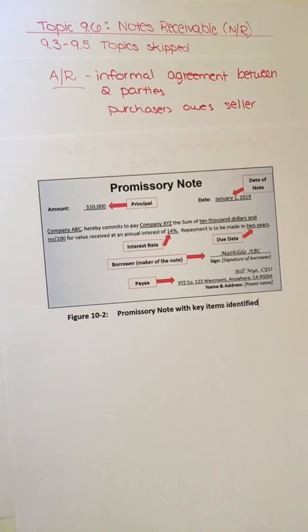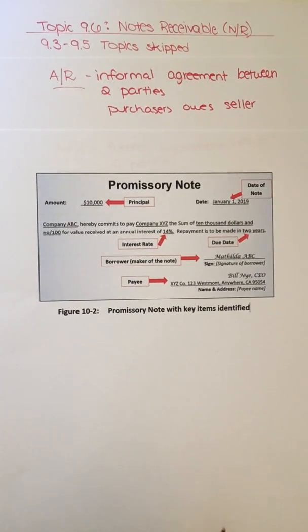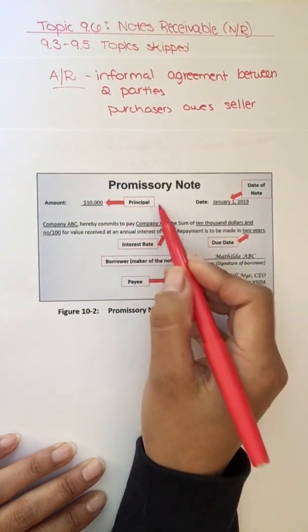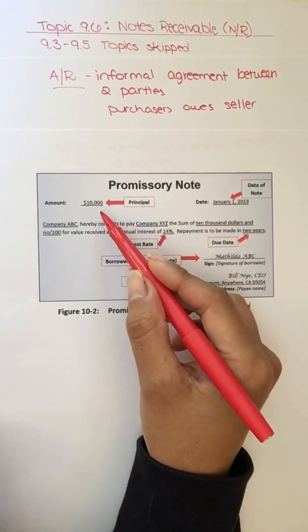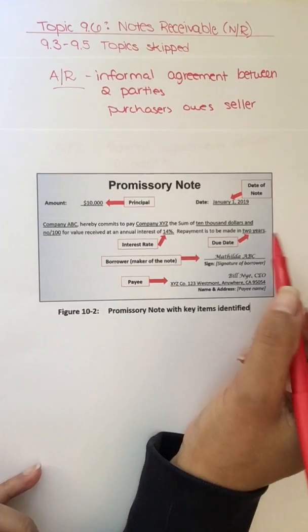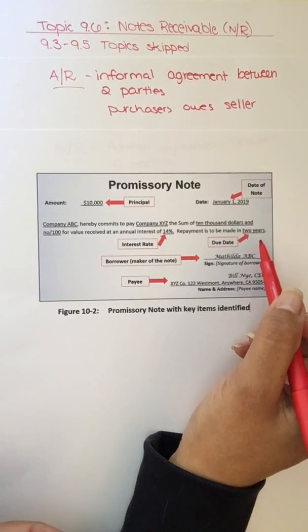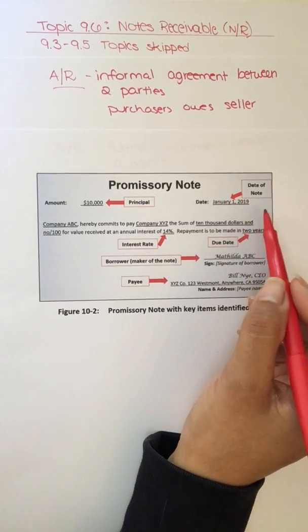And I have an example of what a promissory note might look like. And again, each one's slightly different, but it should contain all these key elements. We need to know what is the principal amount that is owed, what is the due date for payment. It's a predetermined due date. The date the note was created.